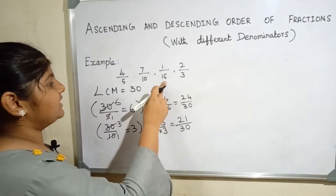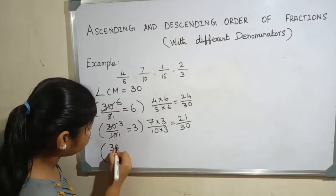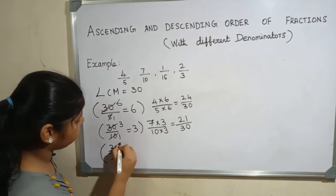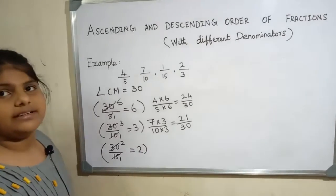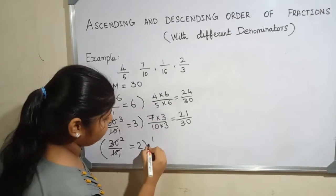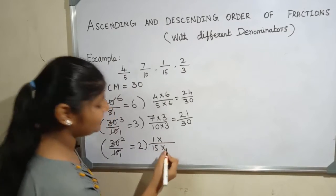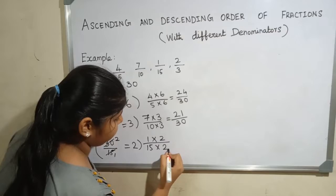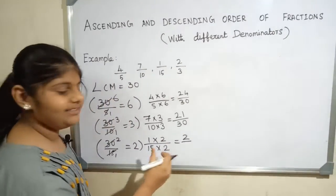The next denominator is 15. 30 by 15. 15 1s are 15, 15 2s are 30. We will take the next fraction 1 by 15, multiply with 2. 1 twos are 2, 15 twos are 30.